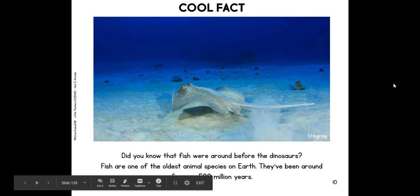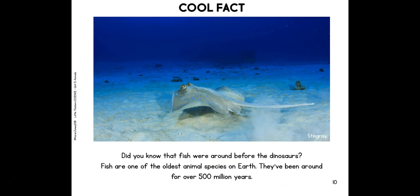Cool fact: did you know that fish were around before dinosaurs? Fish are one of the oldest animal species on earth. They've been around for over 500 million years. Wow, that's a lot of time!